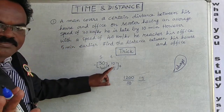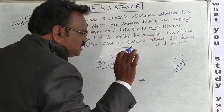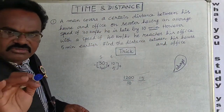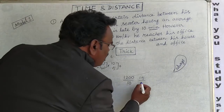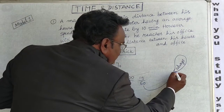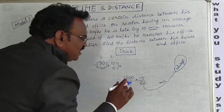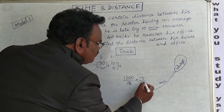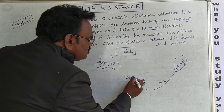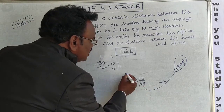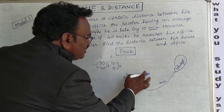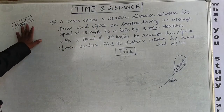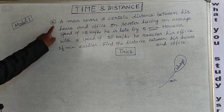The time is given in minutes, so always divide by 60 to convert to hours. Simplify: 1200 divided by 5, divided by 15/60. Cancelling gives the answer 30 km. So the distance between the house and office is 30 kilometres.